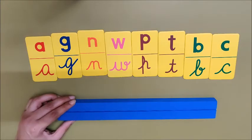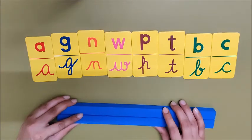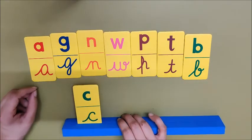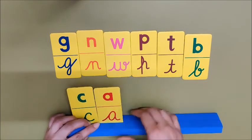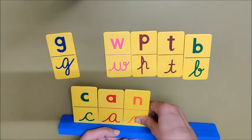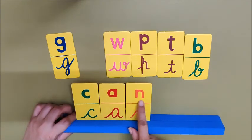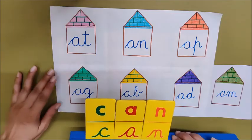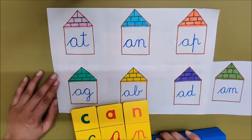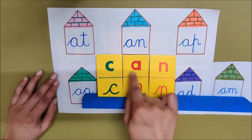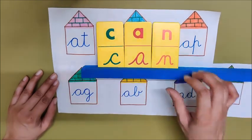Mama said, can. Children, what is the first sound in can? K. Place K here. What is the next sound? A. Place A here. What is the last sound in can? N. Place N here. Now join and check. K - A - N. Can. Yes, we have made the word correctly. Which house will it go to? An house. Can - An. Can goes inside An house.